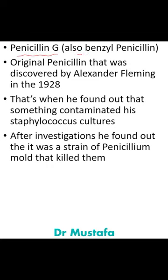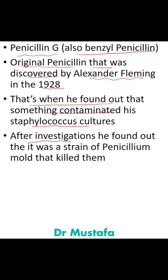Penicillin G, also called benzyl penicillin, is the original penicillin discovered by Alexander Fleming in 1928. He found that something had contaminated his staph cultures, and after investigation, he discovered it was a strain of the penicillin mold that killed the bacteria.